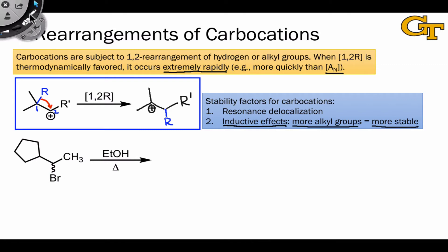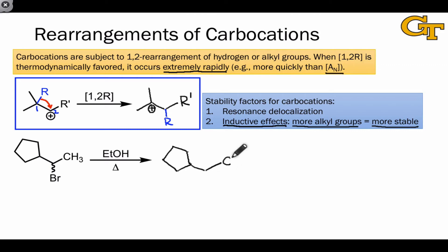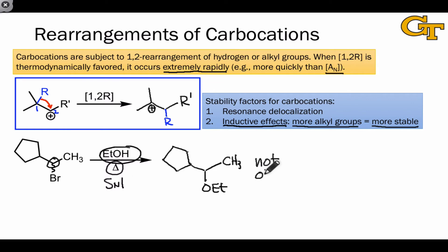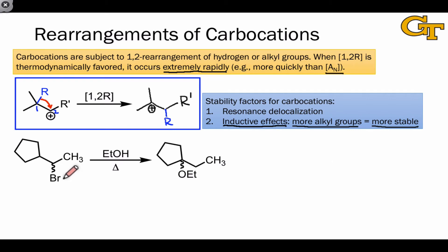Consider the reaction shown here. At first glance, we would expect this reaction to occur through an SN1 mechanism in which the bromine atom is replaced with the nucleophile OEt. The fact that the electrophile is secondary, that heat is applied, and that a weak nucleophile is used all suggest that the SN1 mechanism is operating. However, this is not the product that's observed. Instead, the observed product indicates an overall substitution — bromine is replaced with OEt — but the carbon to which OEt is linked in the product is not the carbon from which bromide departed.